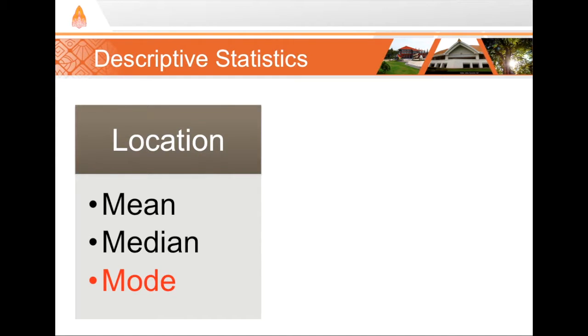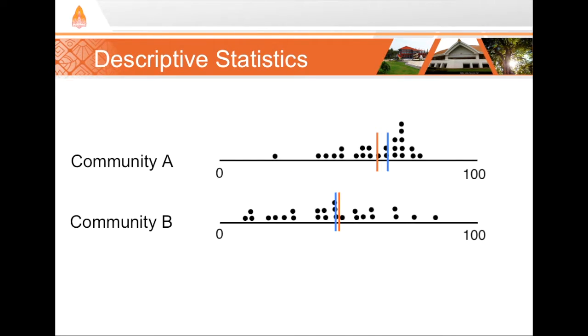The final measure of central tendency is mode. Mode is the most common response. Our results in this visualization are grouped into age ranges of four years. So our mode for the ages in Community A is for this age range of 64 to 68 years. On the other hand, the mode for ages in Community B is for the age range between 40 and 44 years. And again, in this case, the mode informs us that Community A's sample is likely older than Community B.